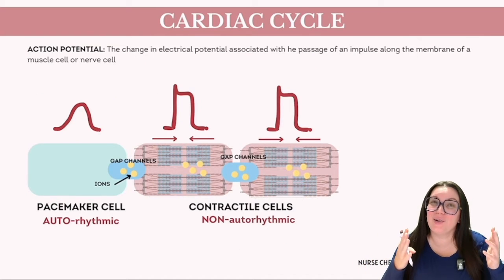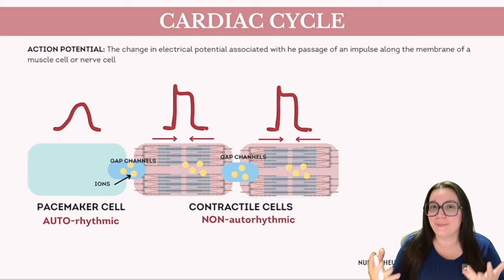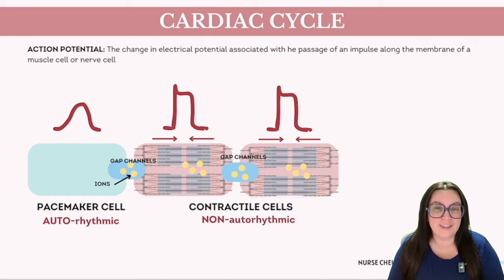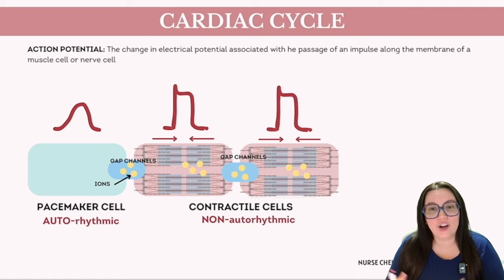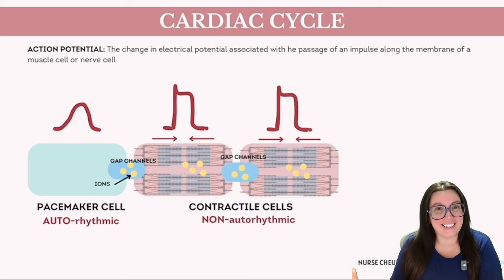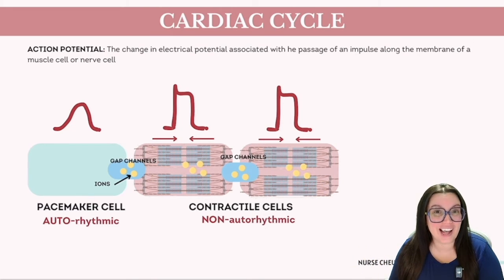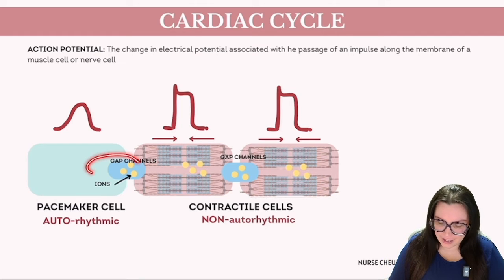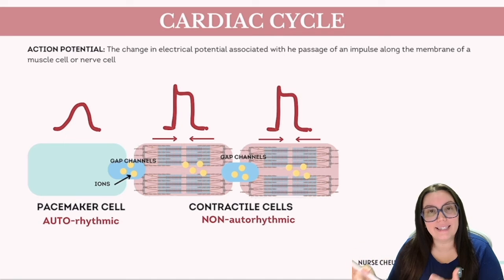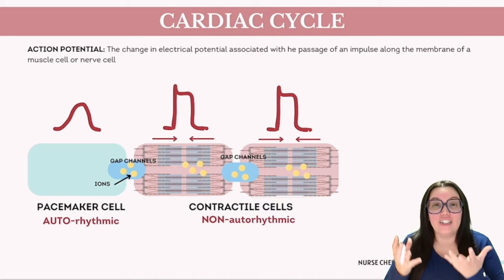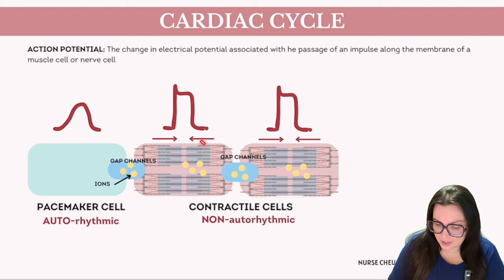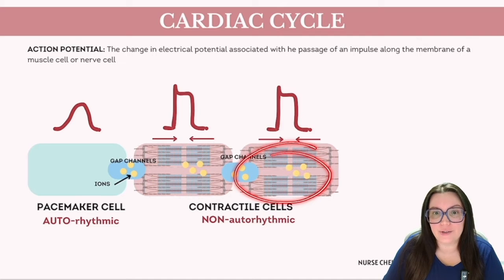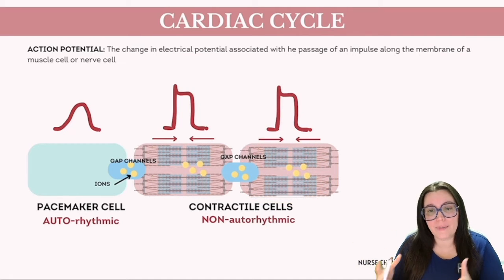Cardiac myocytes contract upon receiving electrical signals termed action potentials. Unlike skeletal muscles, which require neural stimulation, the heart autonomously produces its own electrical impulses and can continue doing so even outside of the body. Myocytes are interlinked via gap junctions, creating conduits where ions can seamlessly transfer from one cell to another, facilitating electrical synchronization so that an action potential in one cell can induce a subsequent action potential in its neighboring cell.